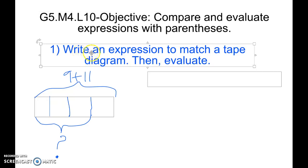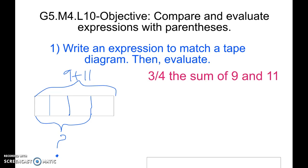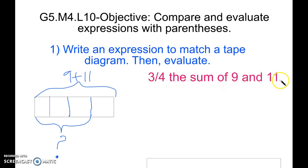Our first example asks us to write an expression to match a tape diagram, then evaluate. Let's take a look at the tape diagram. We see the question mark down here, which tells us what we are looking for. This is our missing information. This represents 1, 2, 3 out of 4. So we have three-fourths here that we are looking for of the sum of 9 plus 11. We are looking at three-fourths the sum of 9 and 11.